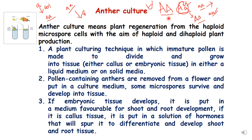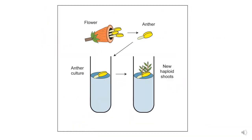Basically, anther culture is a technique for production of haploid plants, whether through embryogenesis or through organogenesis, by exploiting the property of totipotency in plant cells.